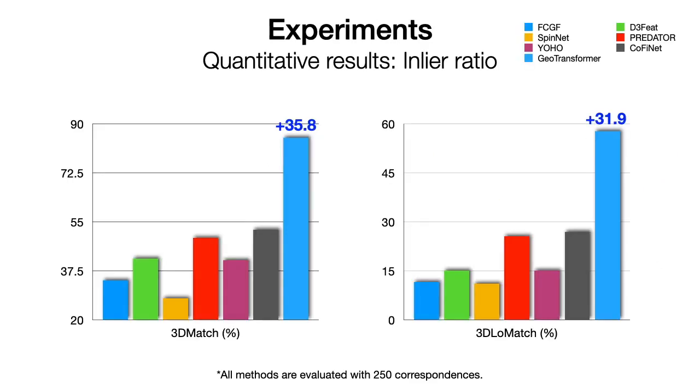Here we show the evaluation on the 3D match benchmark. For the inlier ratio, our method outperforms previous state-of-the-art method CofiNet by over 30 points in both high and low overlap scenes.